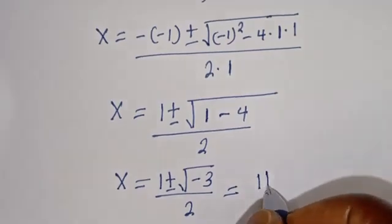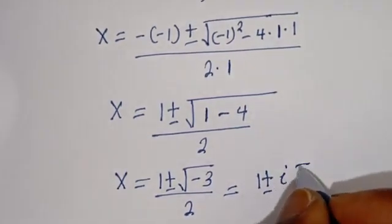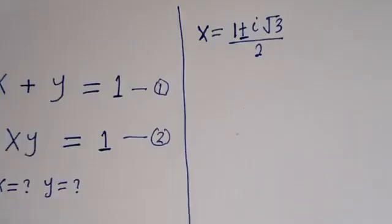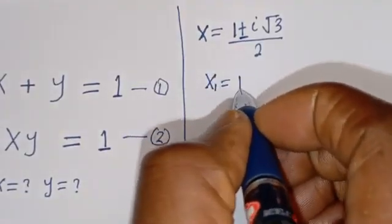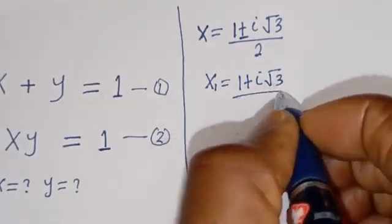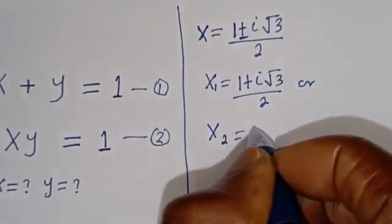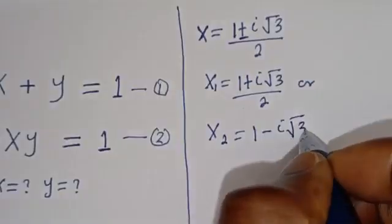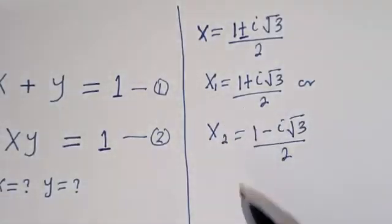This gives S equals 1 plus or minus i square root of 3, divided by 2. So S1 equals (1 plus i√3) / 2 and S2 equals (1 minus i√3) / 2. We've gotten the values of S1 and S2.